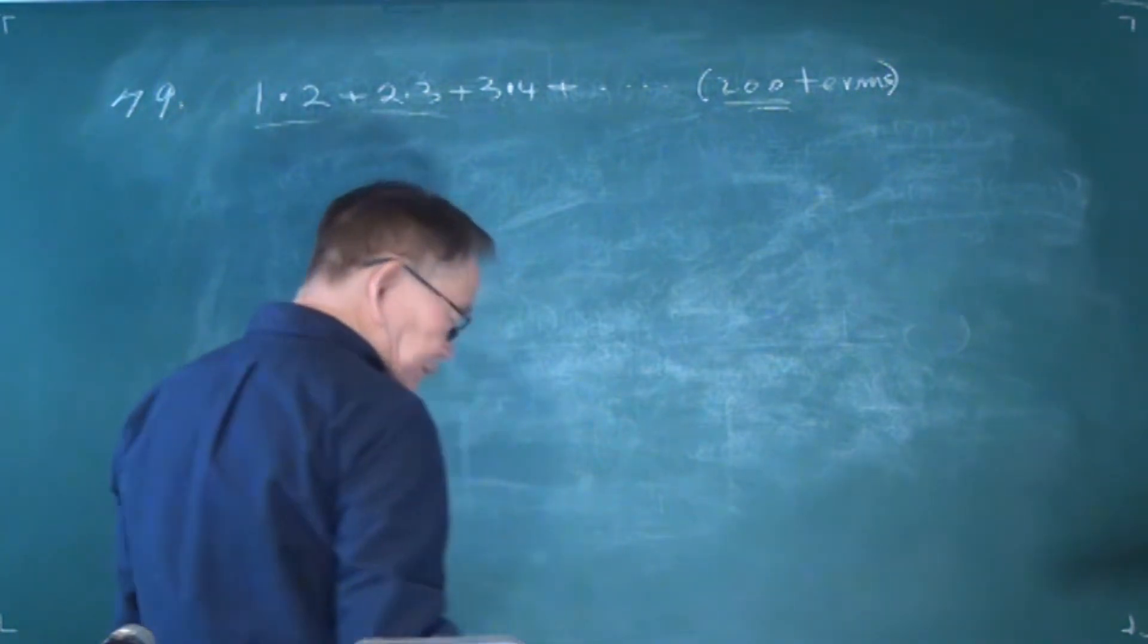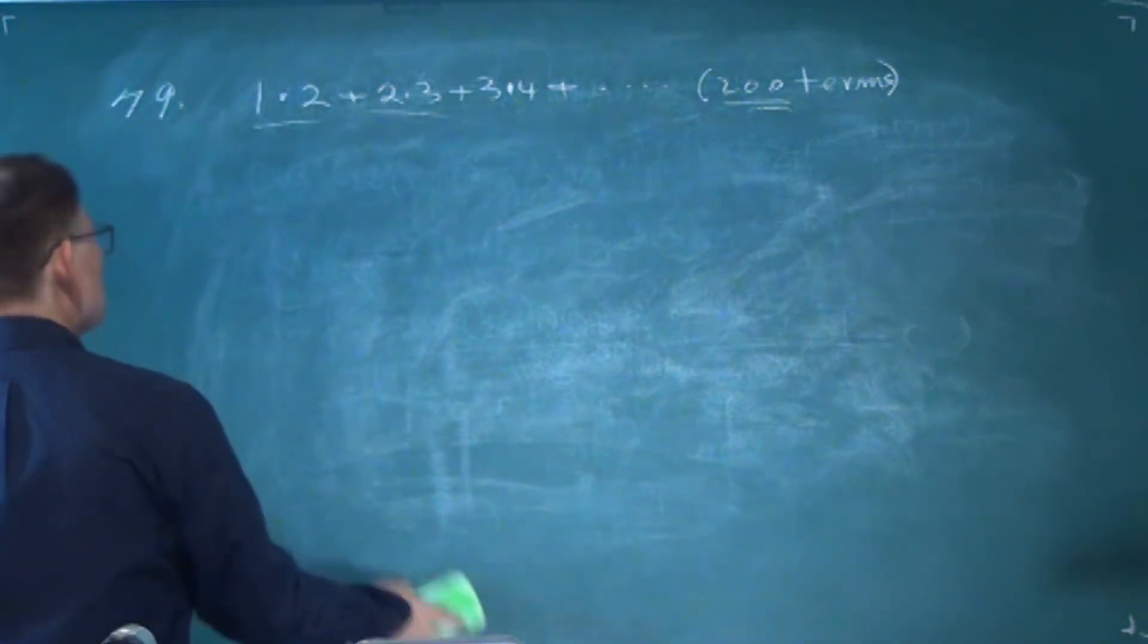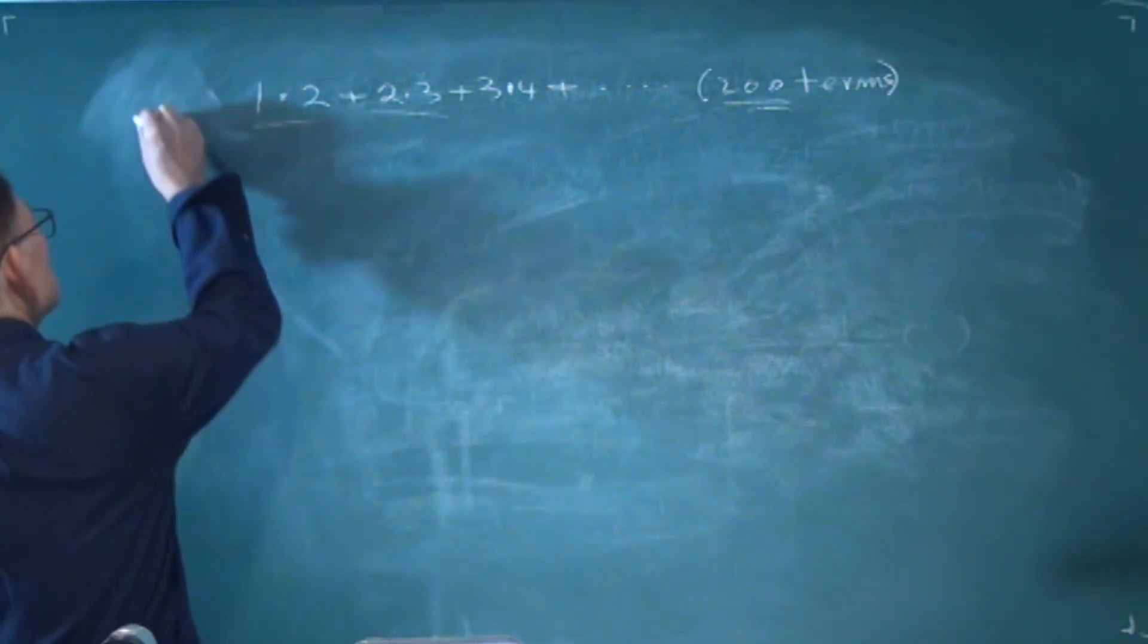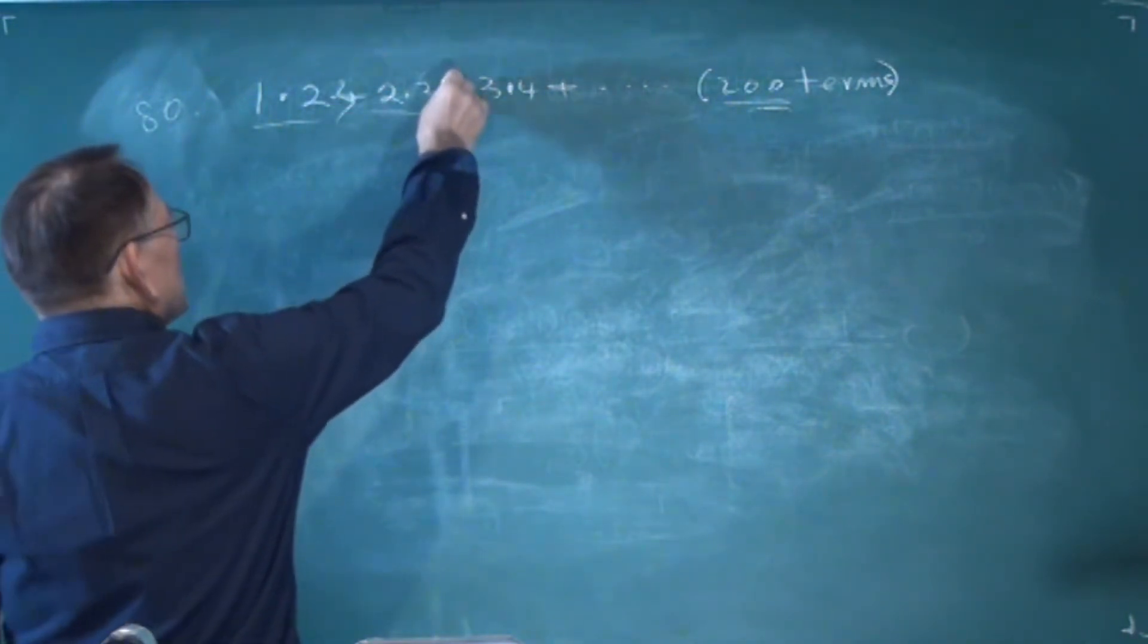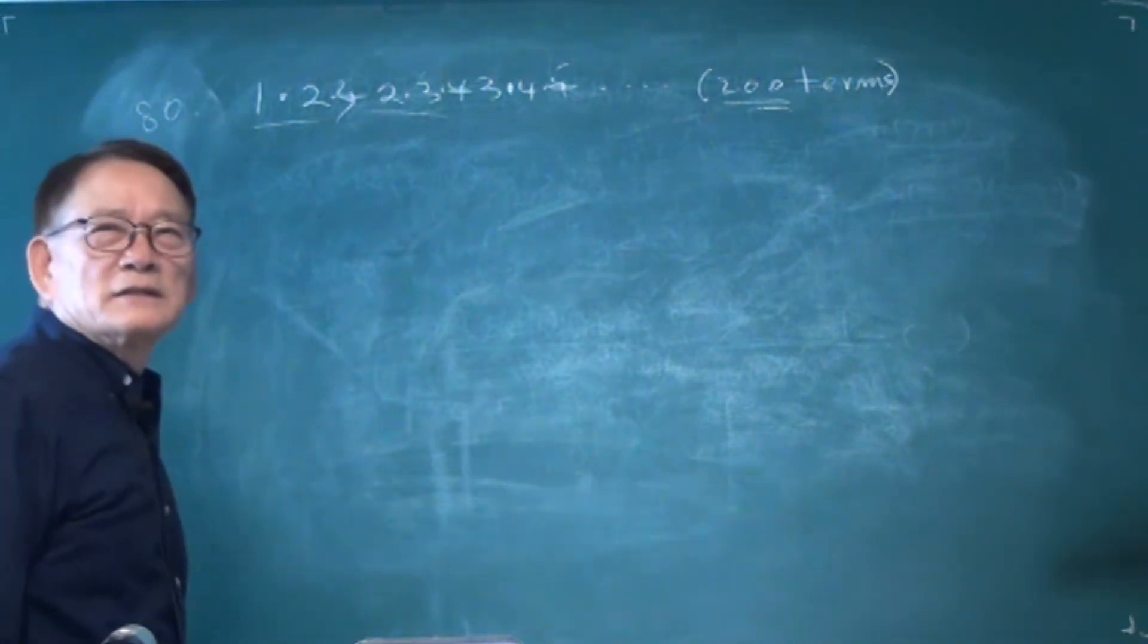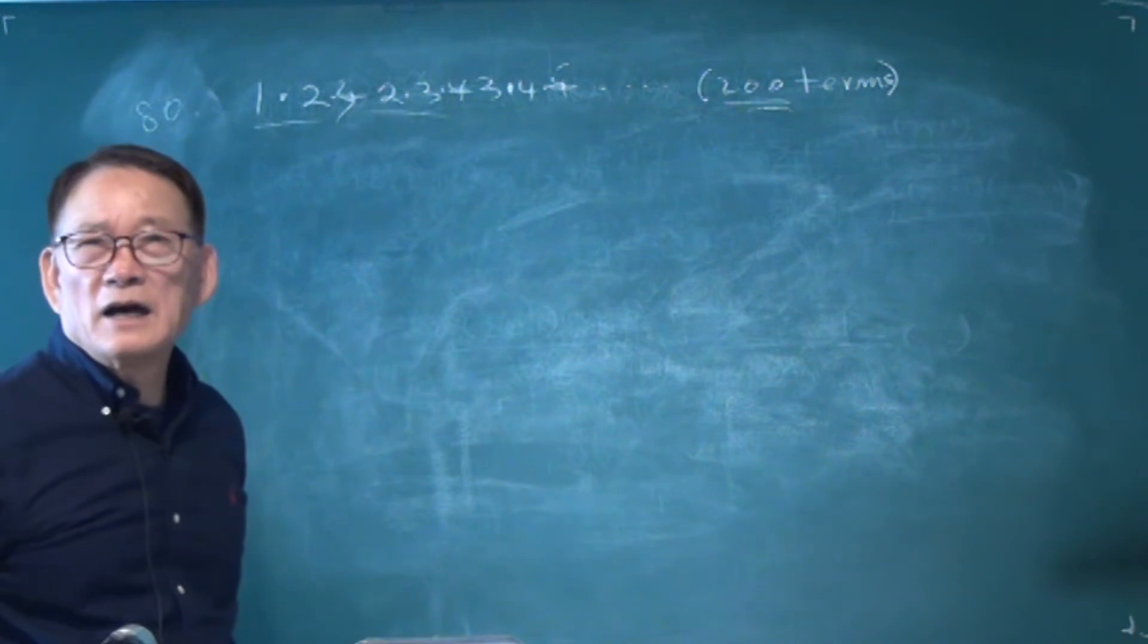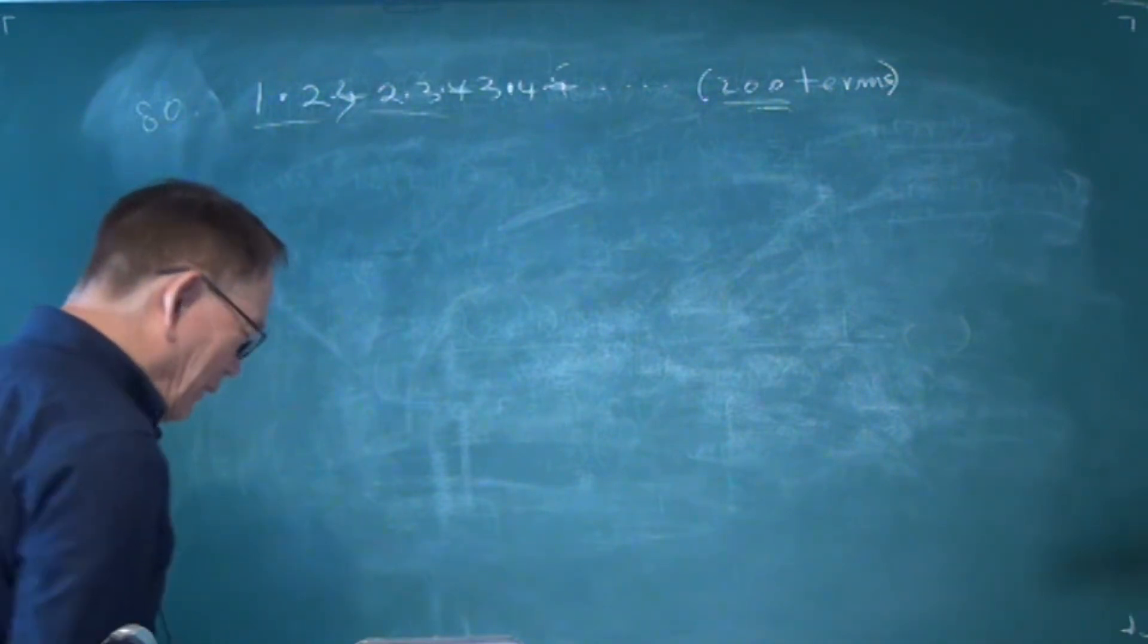Next is problem 80. We have 1 times 2 times 3, 2 times 3 times 4, 3 times 4 times 5, and so on. Just like before with two numbers giving k and k plus 1, when we have three numbers it becomes k, k plus 1, and k plus 2.